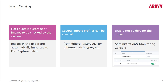For instance, if you've got some images that are of poor quality coming from one source, you might want to set up a special hot folder with special image preprocessing settings, or maybe you turn on data verification to give it a little bit more attention than images that are cleaner. You enable hot folders in the administration and monitoring console.